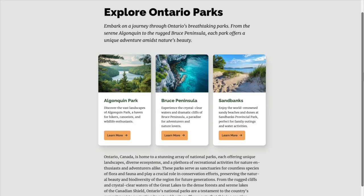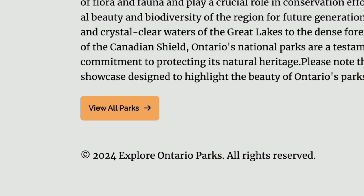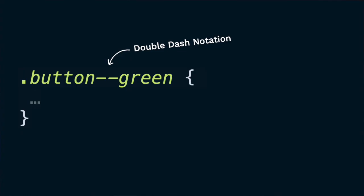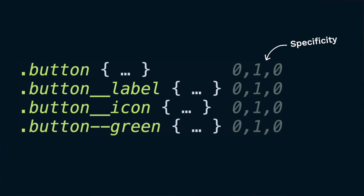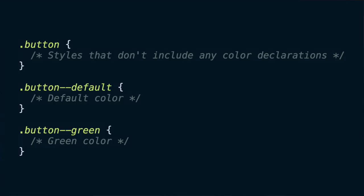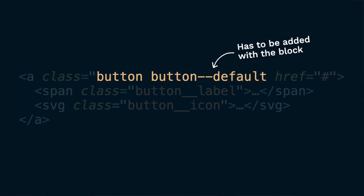A modifier is another BEM entity — it represents a change of state or a slight visual modification of either a block or an element. For example, if we want a button that's green instead of orange, we'd create a class like 'button--green'. Double dash is the standard notation for modifiers. In HTML, we put it on the same node as the block. The same low-specificity approach applies: modifiers go at the same level as blocks and elements, and the override works because 'button--green' is declared after 'button'. You can also introduce a default modifier containing only the declarations you later override.